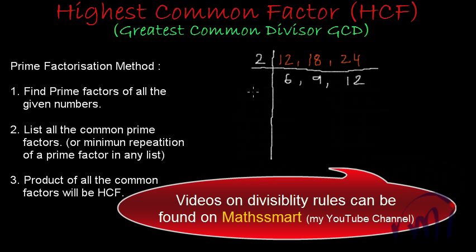So now we have to think about a different number which can divide all of them. Let's go to 3. 6 is divisible by 3, 9 is divisible by 3, and 12 is also divisible by 3. So 3 will be the next common factor. We have to think about a prime number which is a factor of all the given numbers, and here 3 will be the next common factor.